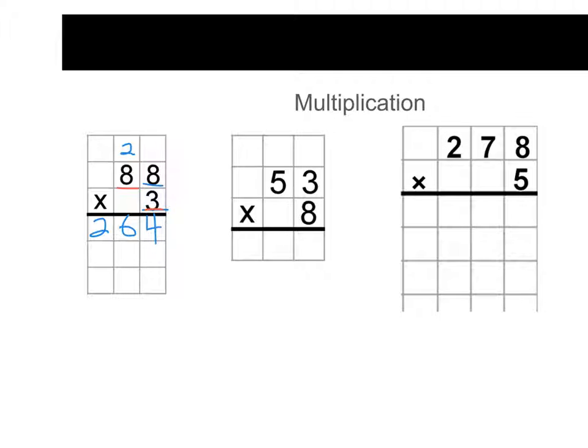8 times 3 was 24. We carried the 2. 8 times 3 was 24 again. But we had to add that 2 up above, so it actually made it 264. Now if we take a look over here on the right, 278 times 5. We need to do 8 times 5 first. 8 times 5 is 40. We put the 0 in the ones place. We put the 4 in the tens place.